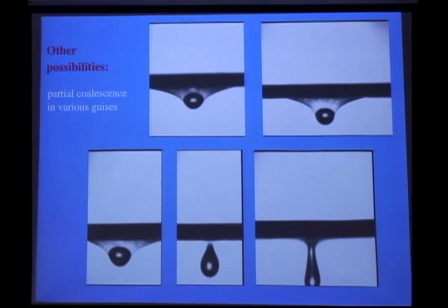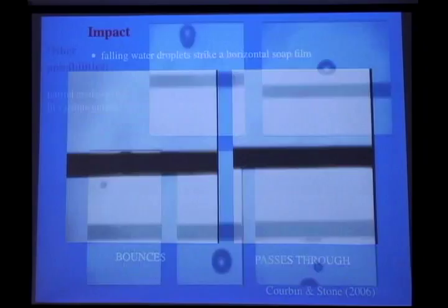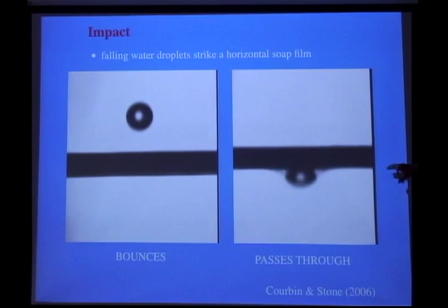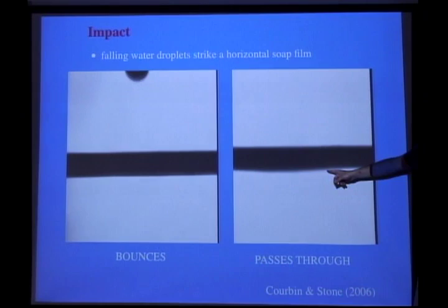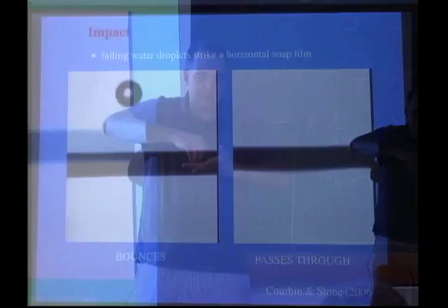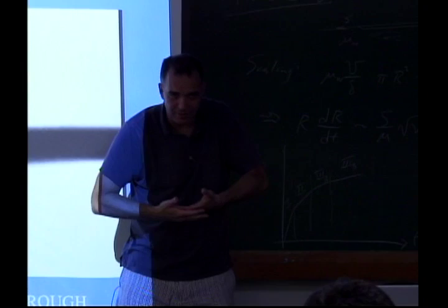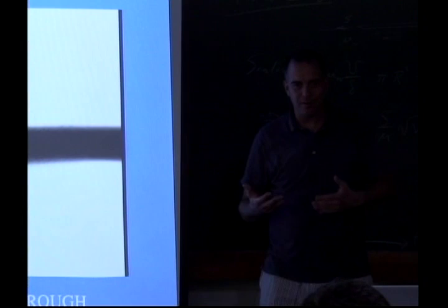A thing to note is that when it passes through, it actually doesn't break the film. What happens is the drop goes into the film, the air layer between the drop and the bath gets sufficiently thin that it merges, so then the drop is inside the film, and then it falls out of the bottom. But it doesn't break the film, because it's a soap film and it's basically elastic by virtue of the surfactants. As it enters the film, parts of it can be ejected up or down.